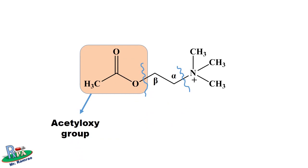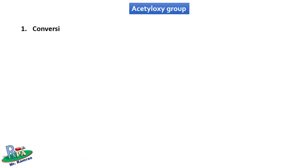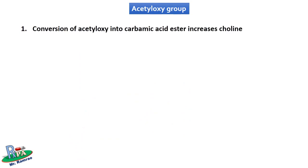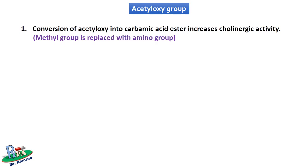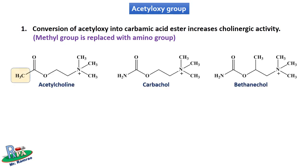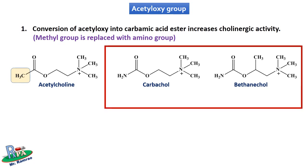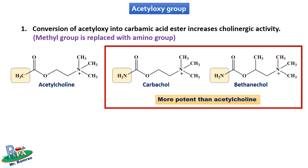The last part of the acetylcholine molecule is the acetyloxy group. The first point is that conversion of the acetyloxy group into a carbamic acid ester increases cholinergic activity, where the methyl group is replaced with an amino group. Acetylcholine is an acetic acid ester, whereas carbachol and bethanechol are carbamic acid esters, and carbachol and bethanechol are more potent than acetylcholine at cholinergic receptors.